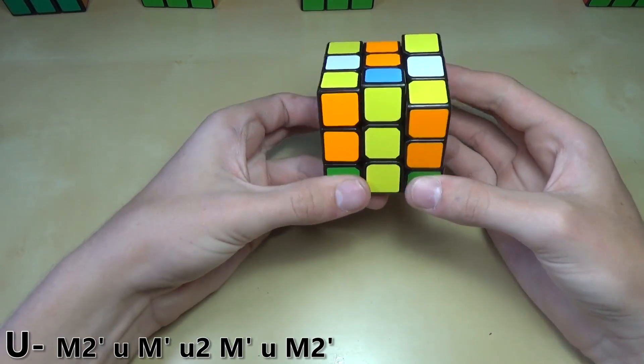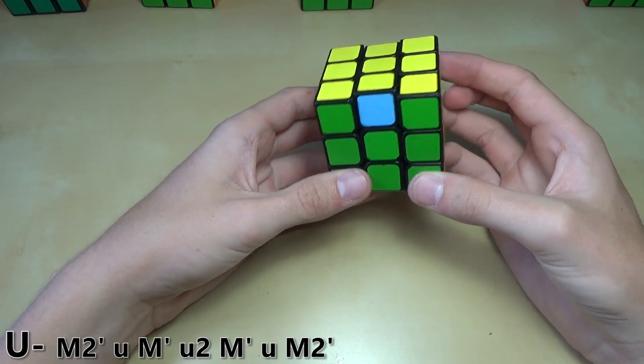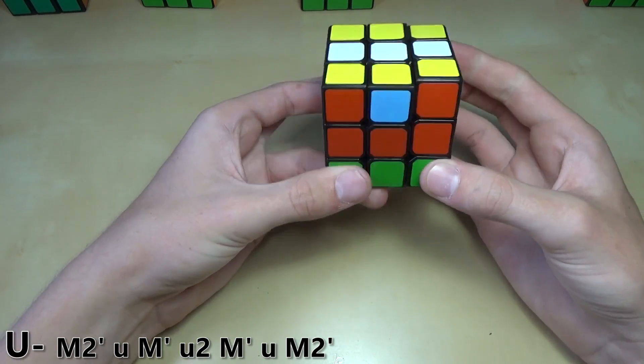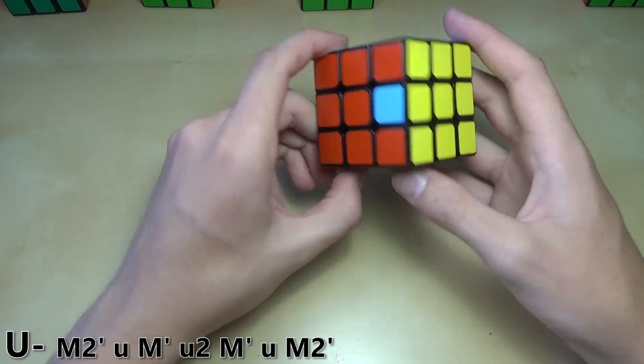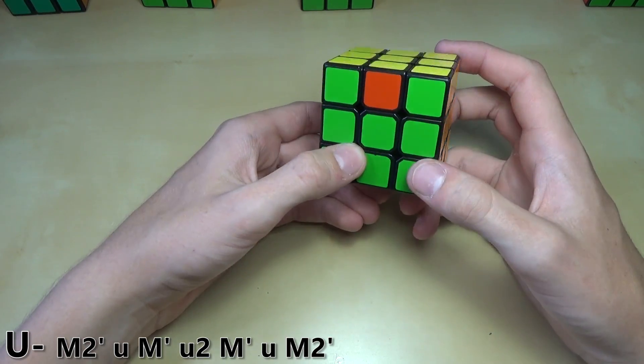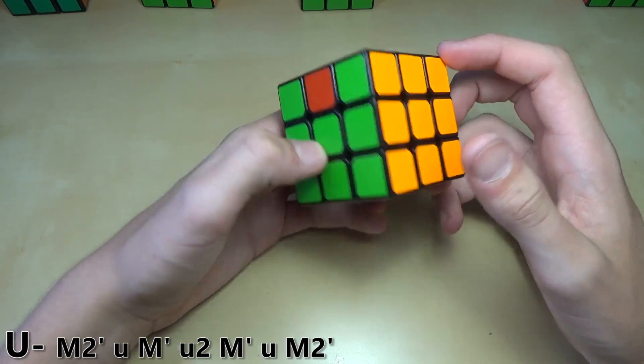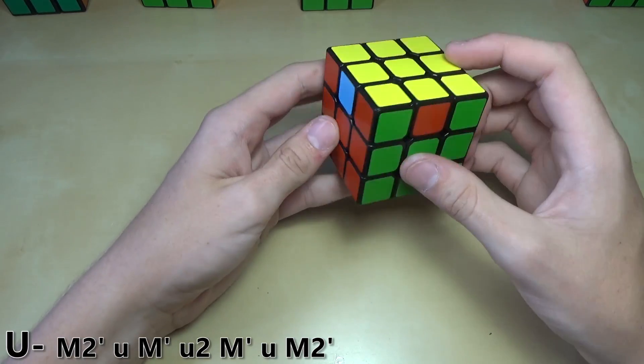A lot of faster people do already use this one. I just didn't realize how much faster it was than the normal one for quite a long time. I just recently switched over to it. But I do quite like it. Once I get a little bit faster at it I'll be able to do it quite a lot faster in general. That is the U-B-perm.